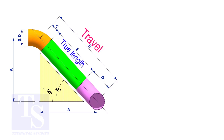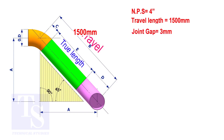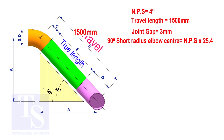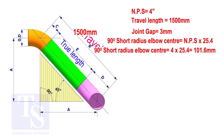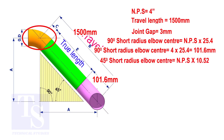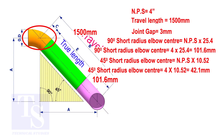Assume that the elbows are short radius. Nominal pipe size is 4 inch. The travel length is 1500 millimeters and the joint gap is 3 millimeters. To calculate the elbow center of a 90 degree short radius elbow, multiply the nominal pipe size by 25.4. The answer is 101.6 millimeters. To calculate the elbow center of a 45 degree short radius elbow, multiply the nominal pipe size by 10.52. The answer is 42.1 millimeters.